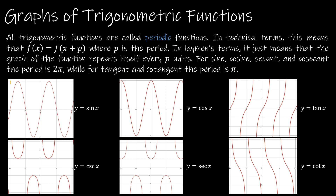If I look at y equals sine of x, if I drew a line at negative 2 pi and 0, and then at 0 and 2 pi, I can see that from negative 2 pi to 0 and from 0 to 2 pi, that's the exact same graph. I could pick it up and move it over to the right and it would line up exactly. The same is true for cosine of x — from negative 2 pi to 0 to 2 pi, it takes 2 pi for it to repeat itself.